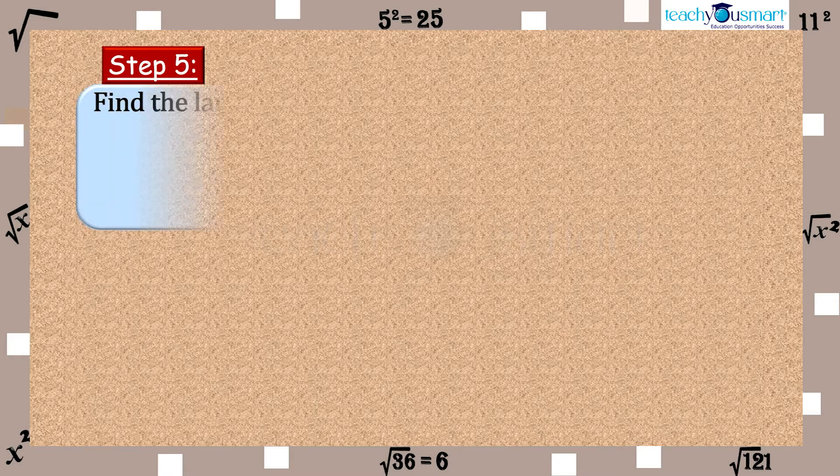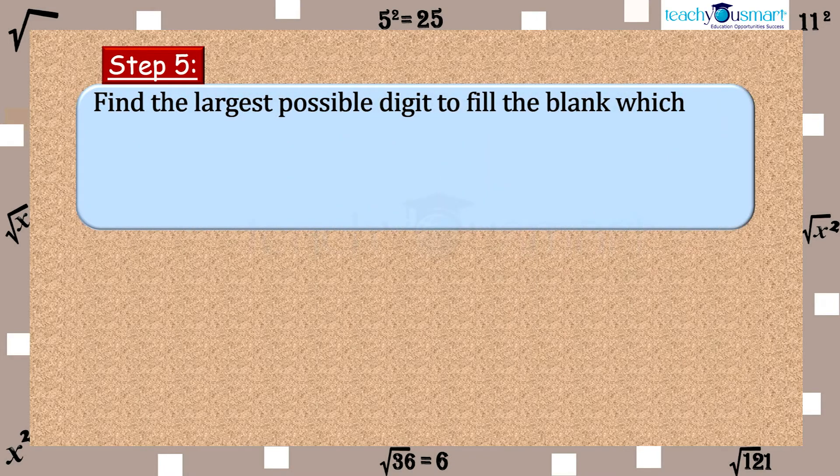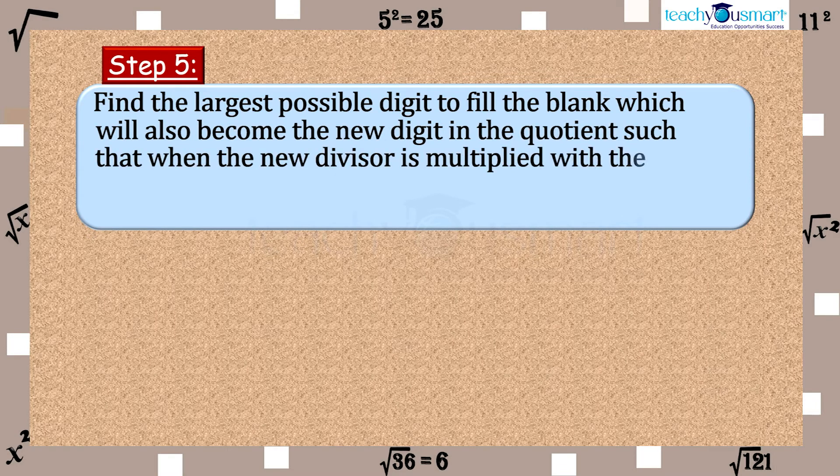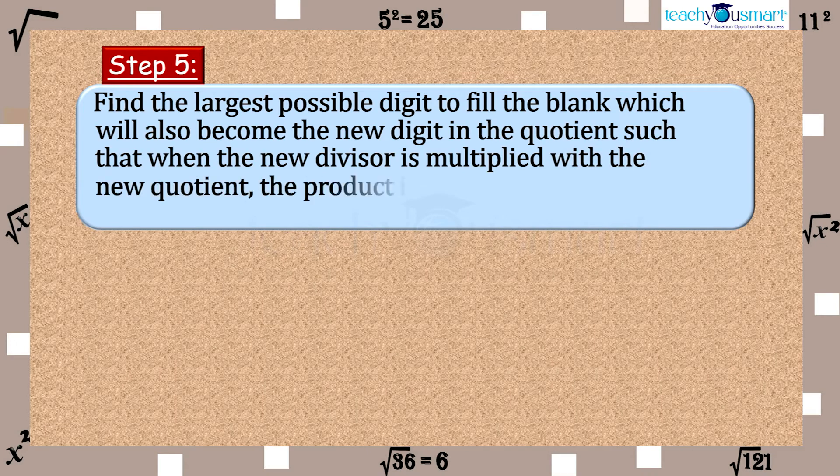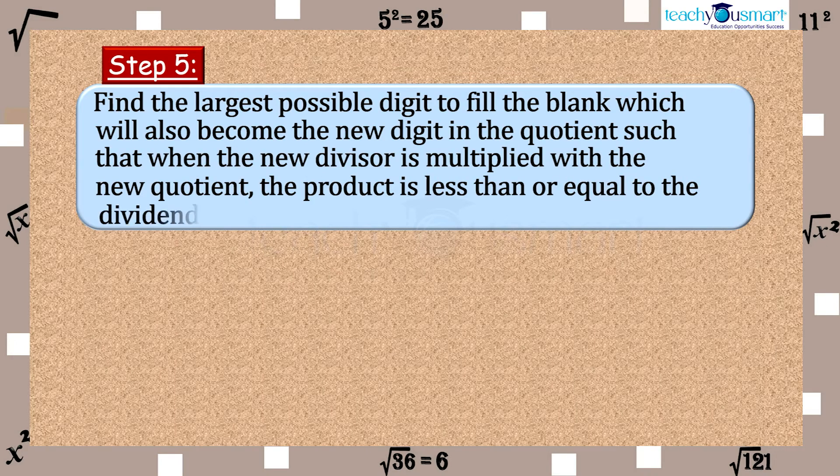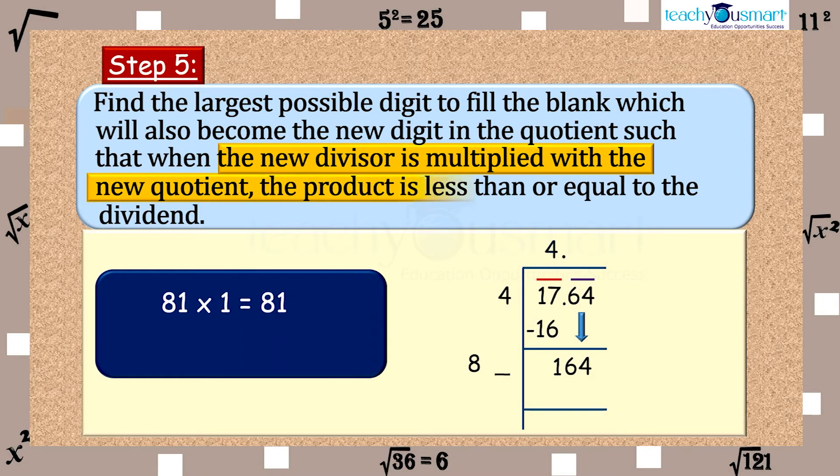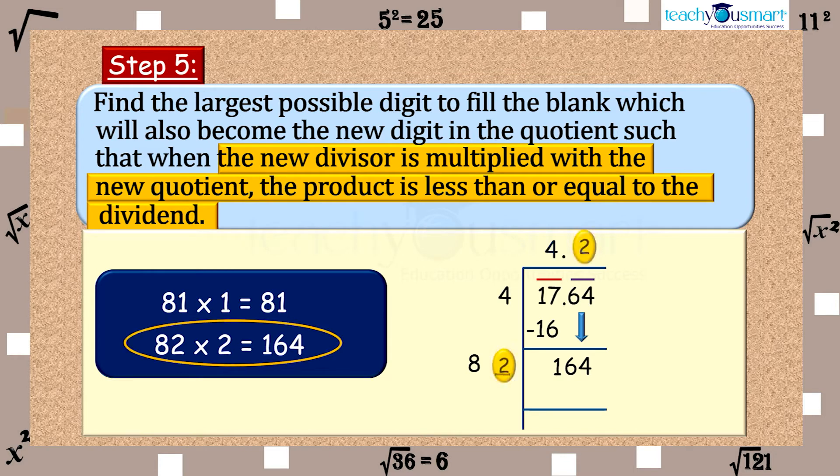Step 5. Find the largest possible digit to fill the blank, which will also become the new digit in the quotient, such that when the new divisor is multiplied with the new quotient, the product is less than or equal to the dividend. That is 81 multiplied by 1 equals 81. 82 multiplied by 2 equals 164. Thus, we choose the new digit as 2. Divide and get the remainder.